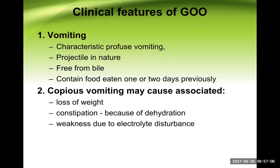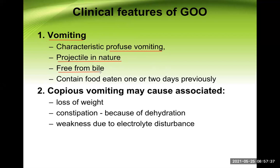The clinical features of gastric outlet obstruction: first is vomiting — recurrent and profuse, because very little passes distally and everything is collected in the distended stomach. It is projectile in nature, meaning it comes out forcefully. There is no bile in the vomitus because bile enters from the second part of the duodenum, and the obstruction is right at the pyloric sphincter level. The vomitus may contain food eaten one or two days previously.